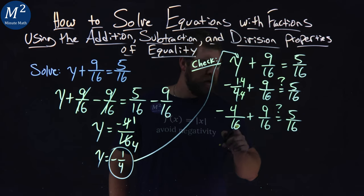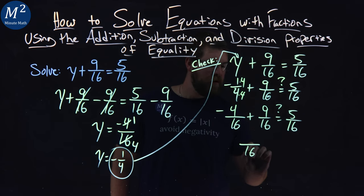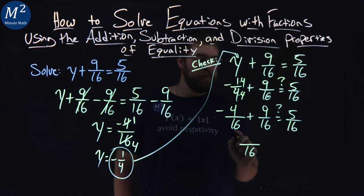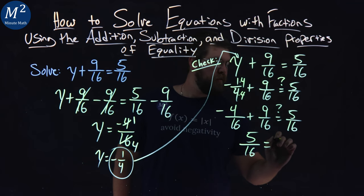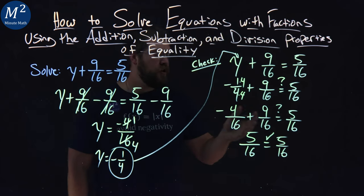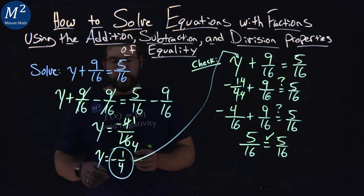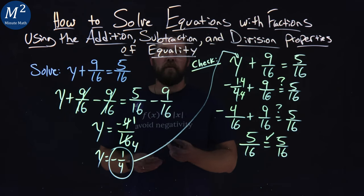Let's see. Common denominator, 16, we're good. The top, negative 4, the numerator, negative 4 plus 9 is a positive 5 equals 5 16ths, and we're good. Our check showed the left and right-hand side were equal, confirming that a solution to our equation was y equals negative 1 4th.